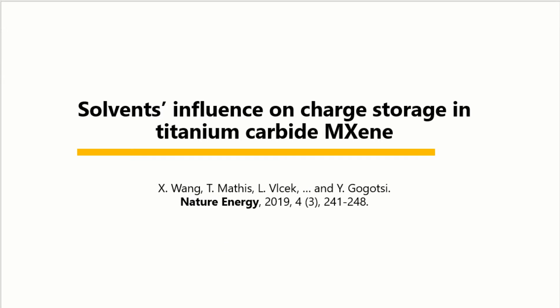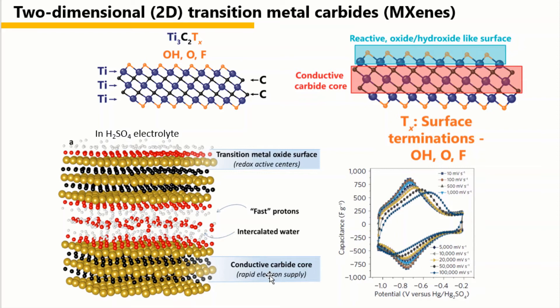Welcome to the Ecamm channel. Today we will talk about how the solvent influences the charging process in a 2D transition metal carbide MXene. MXene is a large family of 2D transition metal carbide, nitride, or carbonitride materials. A single layer of MXene is only a few atoms thick, with a conductive carbide core and a redox-active metal oxide/hydroxide surface. MXene has a very high conductivity of up to 18,000 Siemens per centimeter.